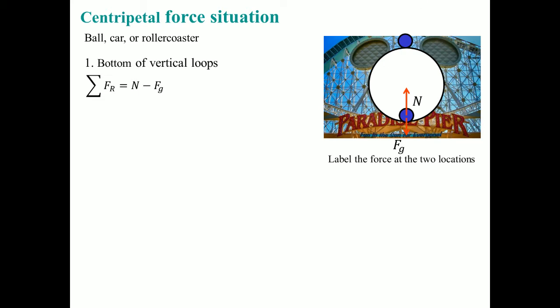This should give you a hint on what the centripetal force is. The summation of F_R, or you could write it as F_C, is equal to the normal force minus the gravitational force. The centripetal force equals M times the centripetal acceleration, and you make the substitution here.